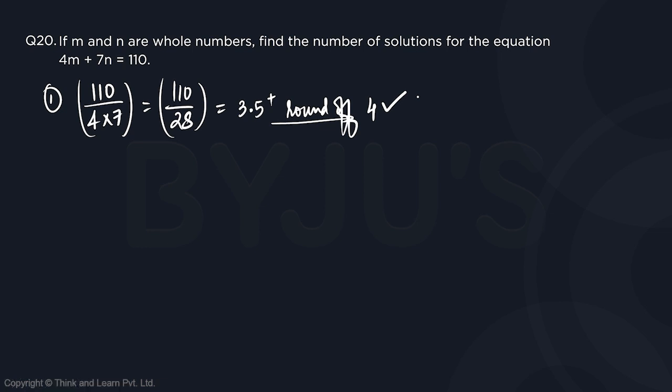The second approach is patiently finding out. So if we look at the values of m and n that will result in an answer. If I take m is equal to 0, n won't be a whole number. If I take n is equal to 0, it will not be a whole number.